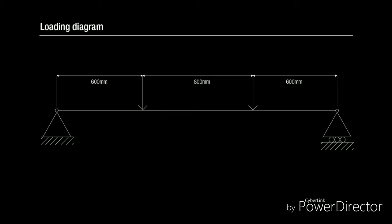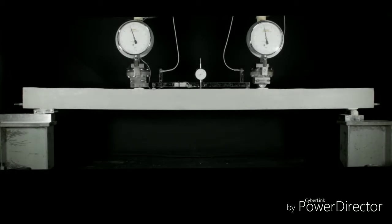The loading diagram shows the beam being subject to four-point bending. The testing rig is now starting to apply vertical loads to the specimen and the beam starts to deflect.